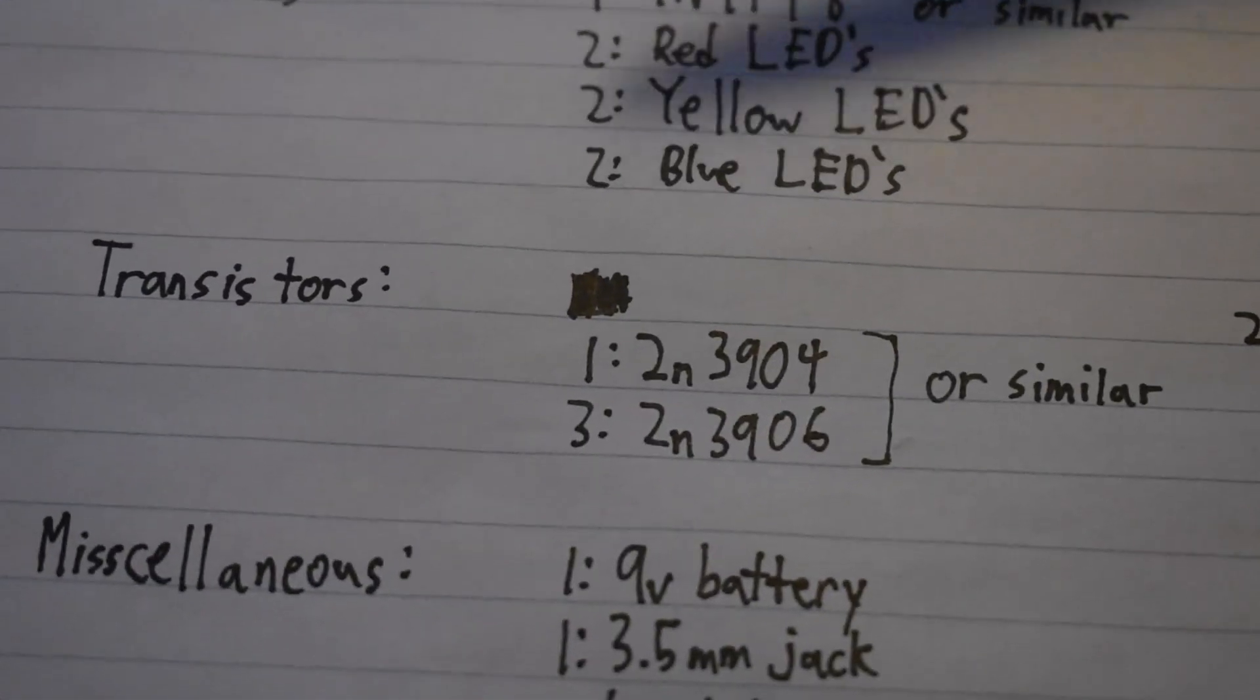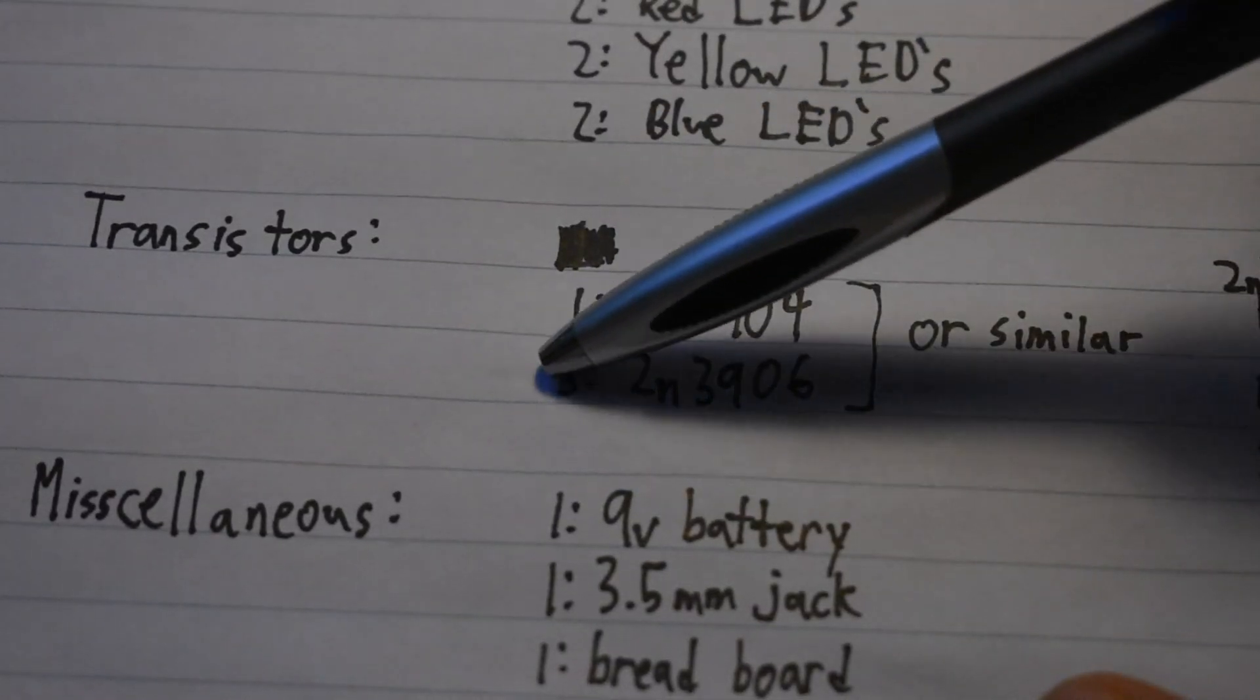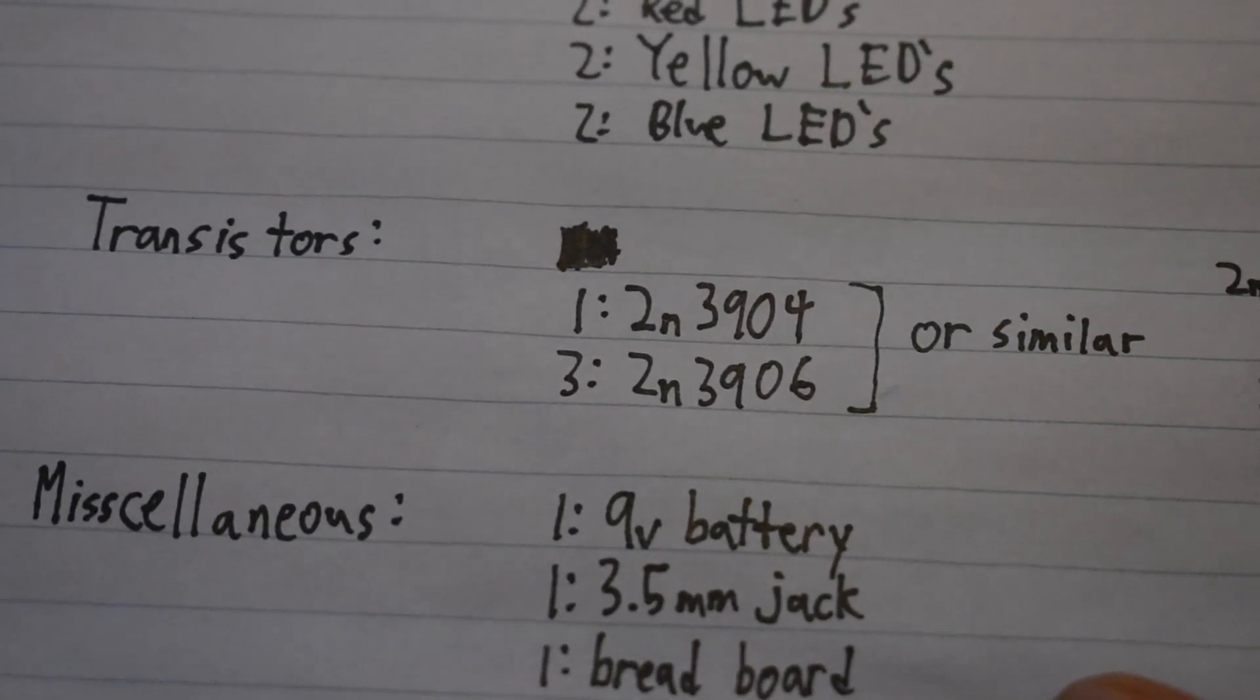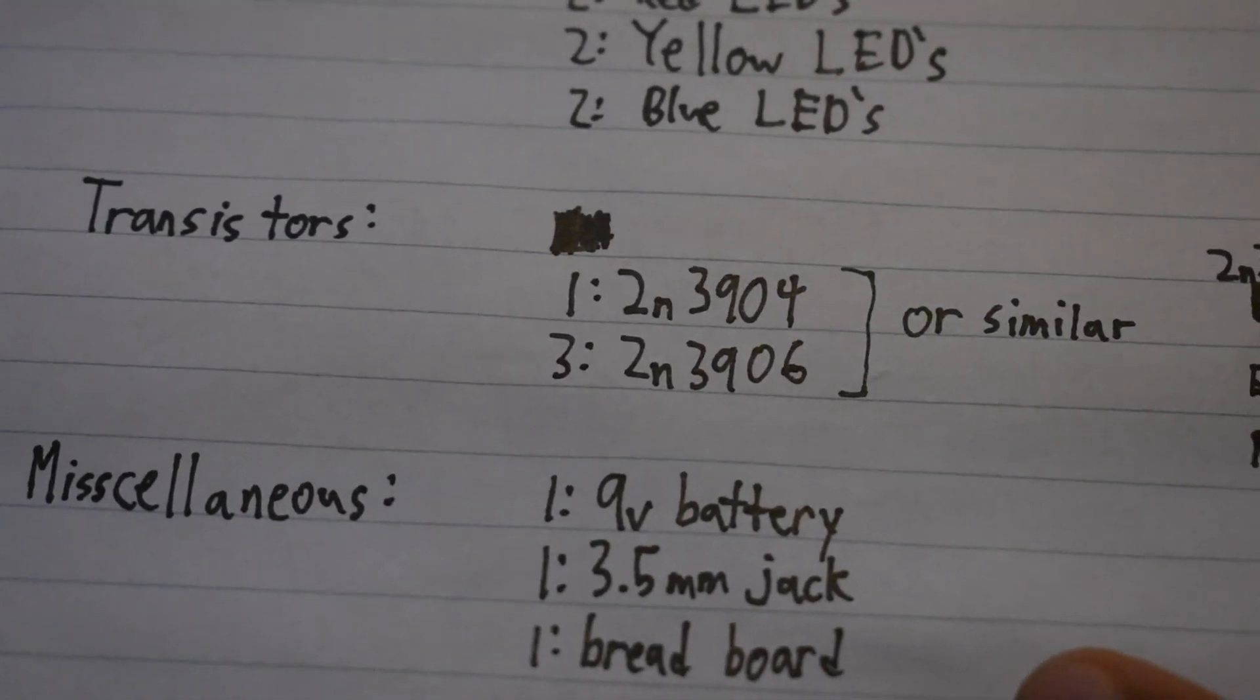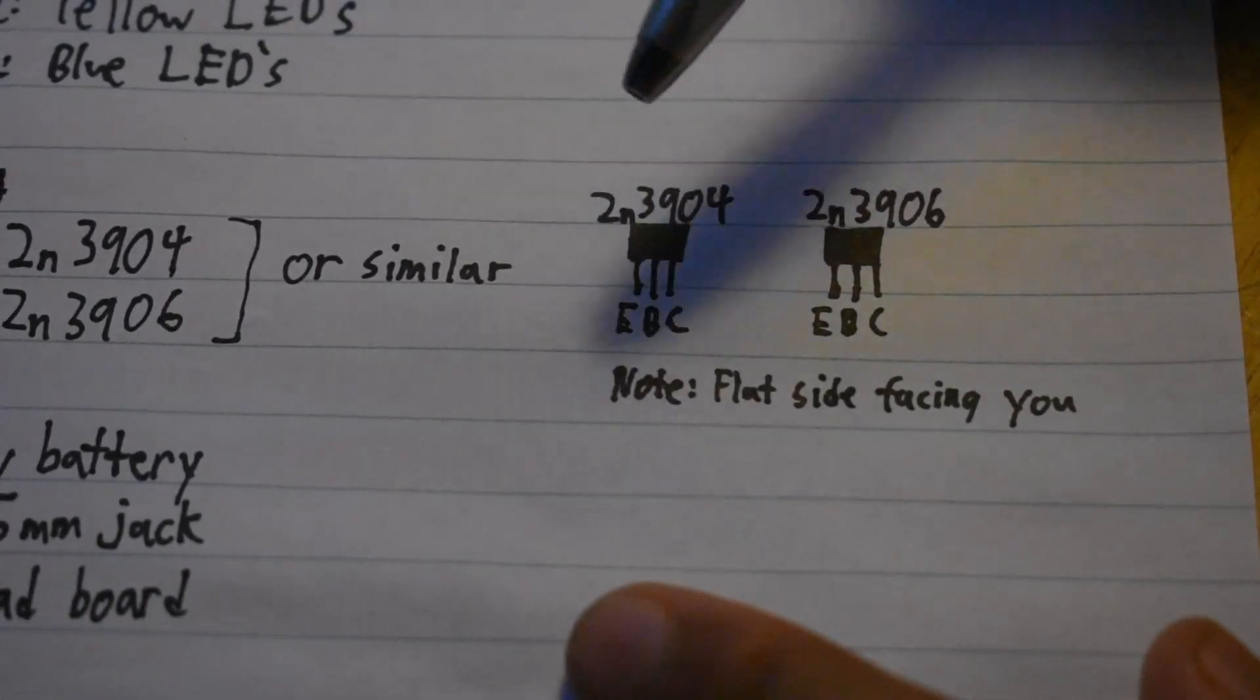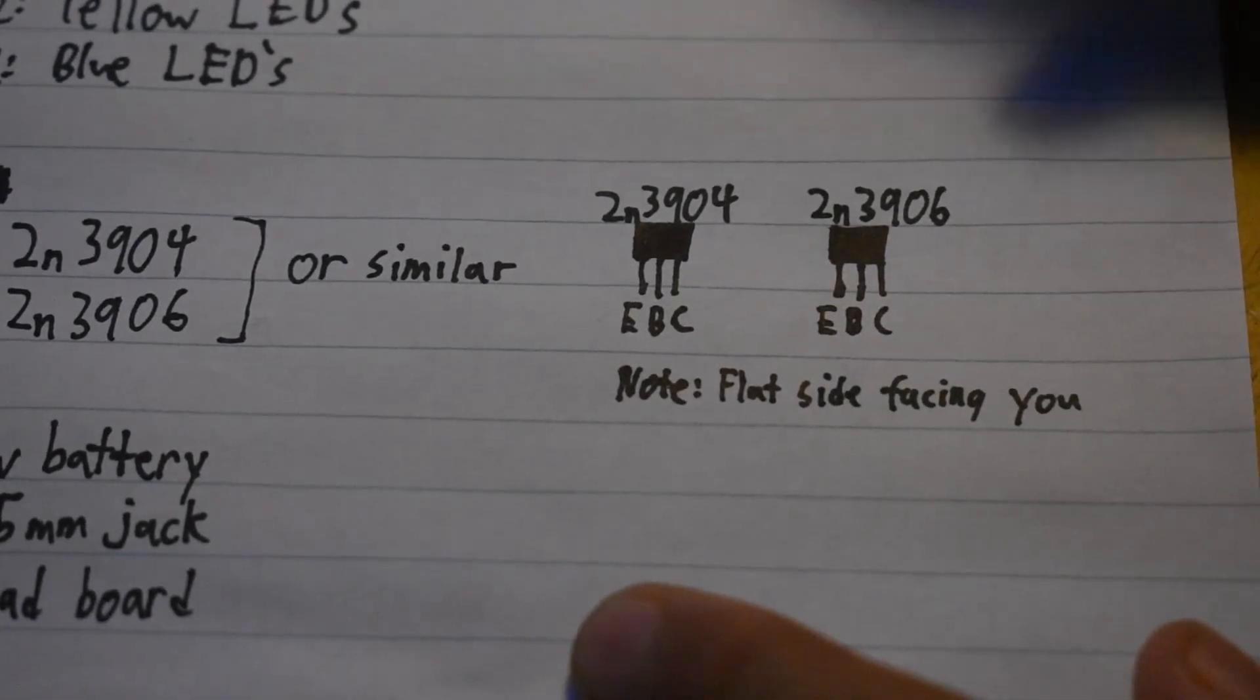For transistors, you will need the following: one 2N3904, three 2N3906s. These can be swapped out for any other transistors, as long as they have the following properties as these. For reference, here is the pinout for these two transistors: emitter base collector, emitter base collector for both.